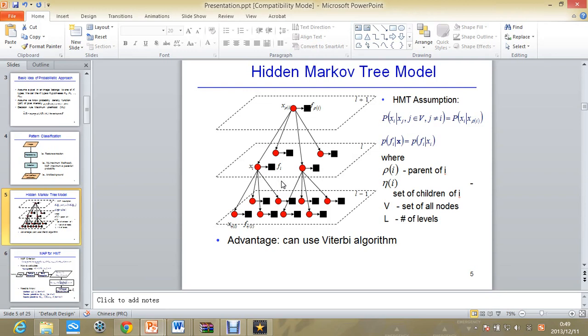In this tree, there are three levels: the parent, the parent of I, and I level, and the set of children of I.